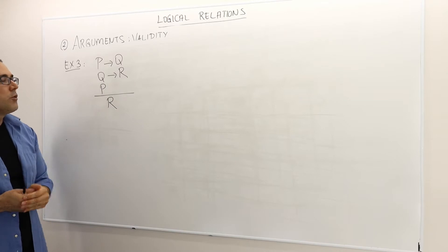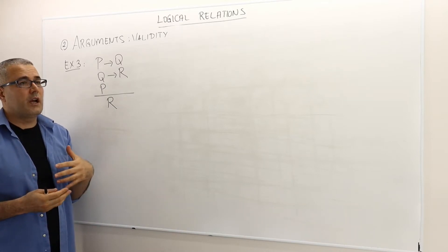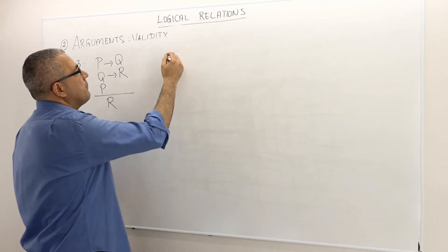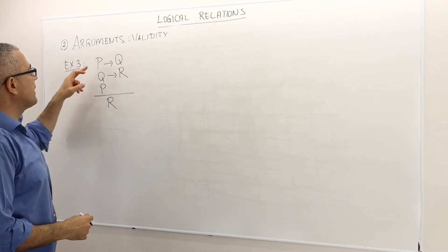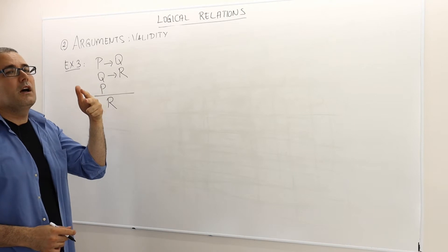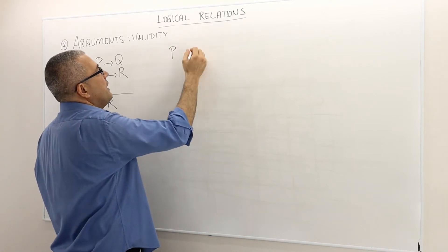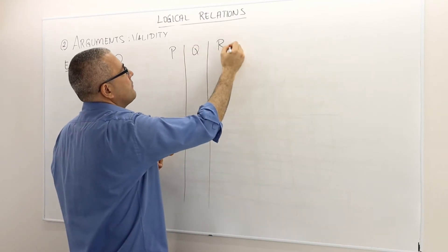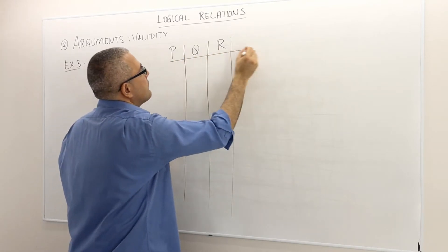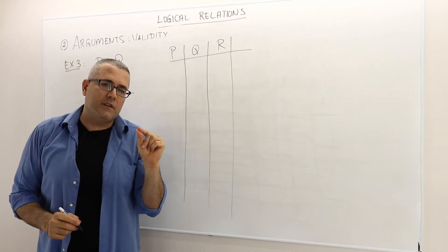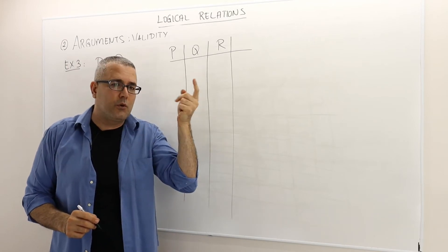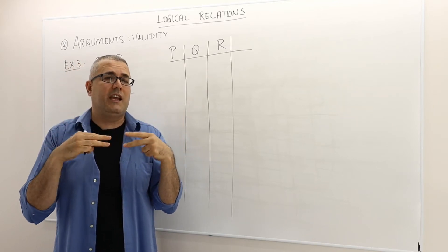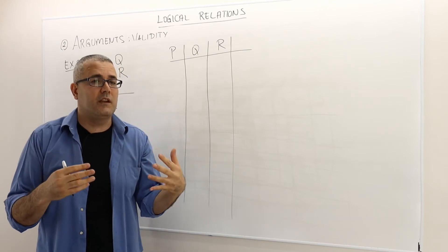So the question is: is this a valid argument or not? I need to construct the truth table of this argument. This time it's different than the previous two examples because I have P, Q, and R — three atomic sentences. Each atomic sentence has two values, either true or false. Because I have three atomic sentences, I have two to the power of three, which is eight total cases to consider.